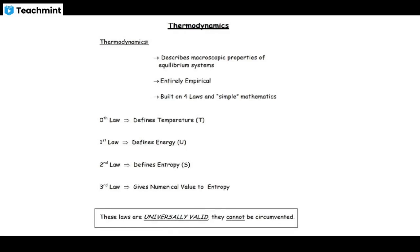The four main laws of thermodynamics are: zeroth, first, second, and third. The zeroth law defines temperature. The first law defines energy — internal energy is defined by the first law. The second law defines entropy. The third law gives a numerical value to entropy.